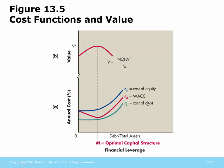We have a graph that shows the value of the company maximized at a certain point. Here's the cost of equity, here's the cost of debt, and the weighted average cost of capital is the combination of those. Where that weighted average cost of capital is at its minimum, that is the point at which value is maximized. So one of the things managers want to do is find the relationship between debt and equity that minimizes the cost of financing the company.